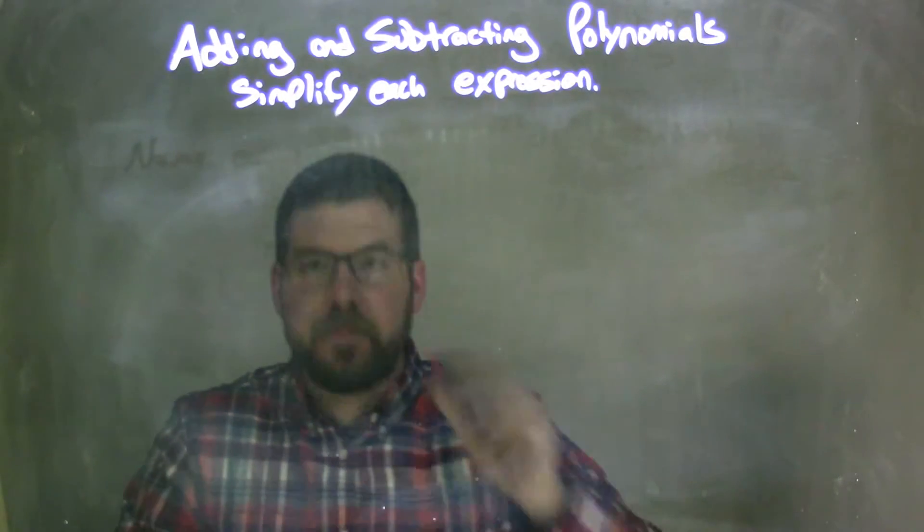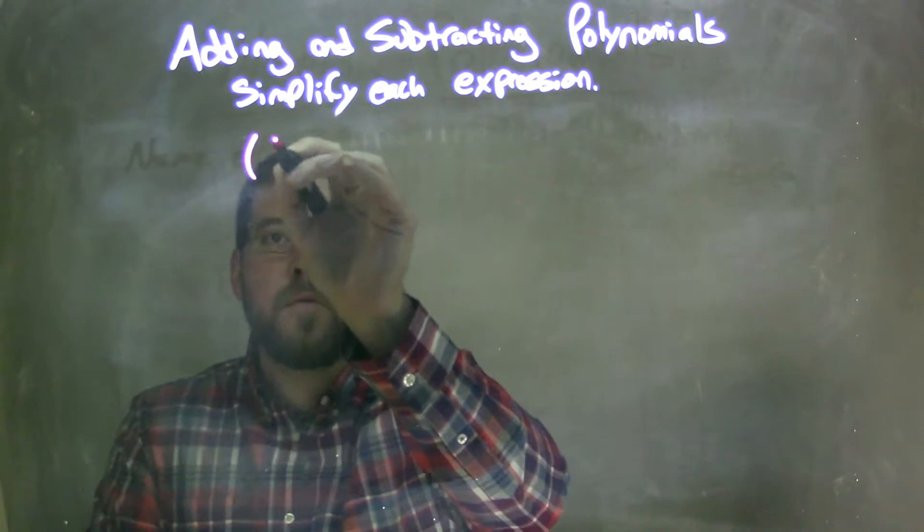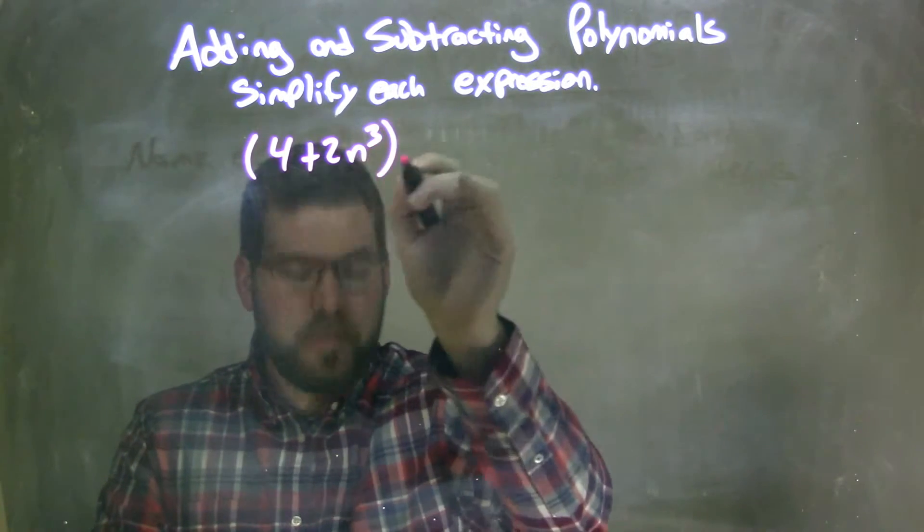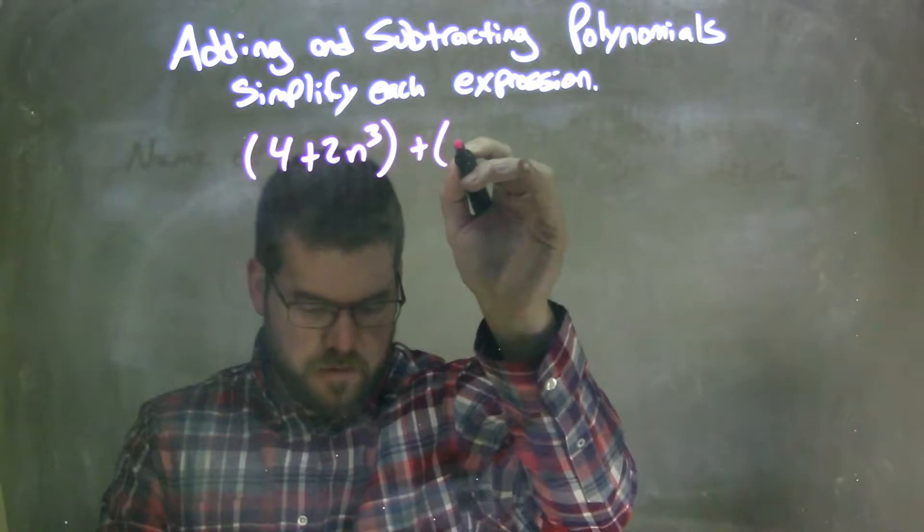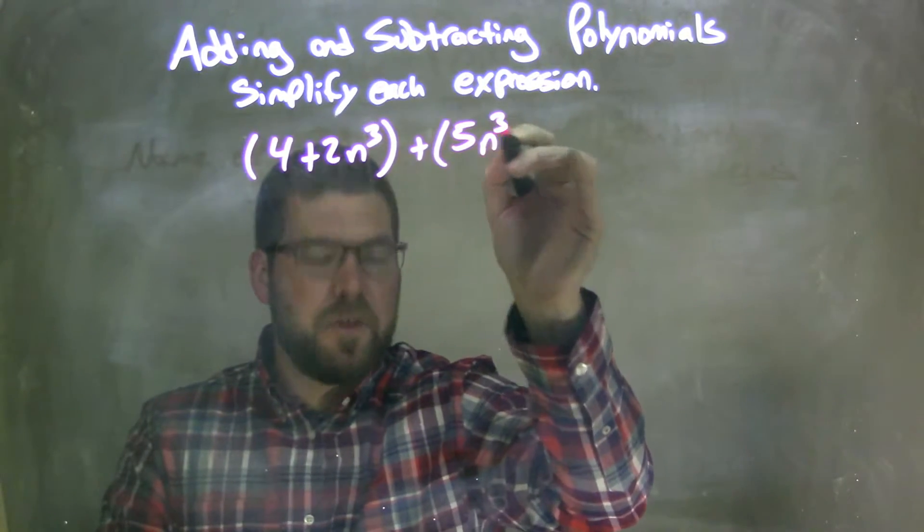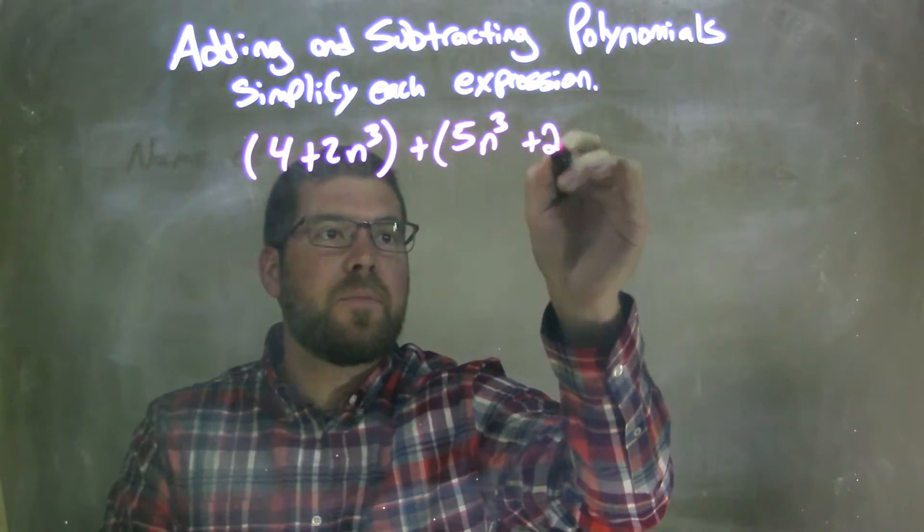So if I was given this polynomial, 4 plus 2n to the 3rd parentheses, plus 5n to the 3rd plus 2. Okay?